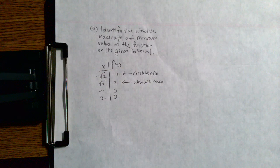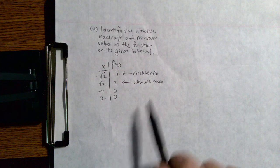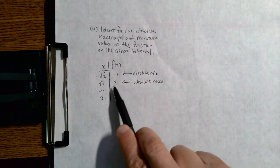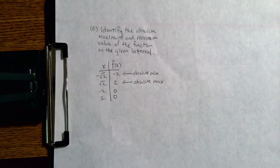The absolute minimum value is negative 2, occurring at negative square root of 2. The absolute maximum value for this function on this interval is 2, occurring at the square root of 2. So that completes this problem. I hope you found it helpful.